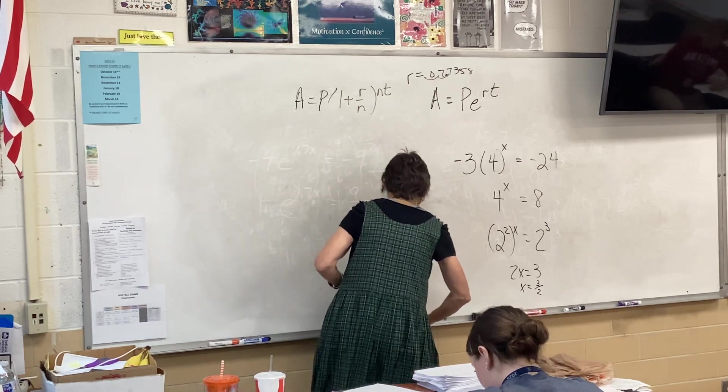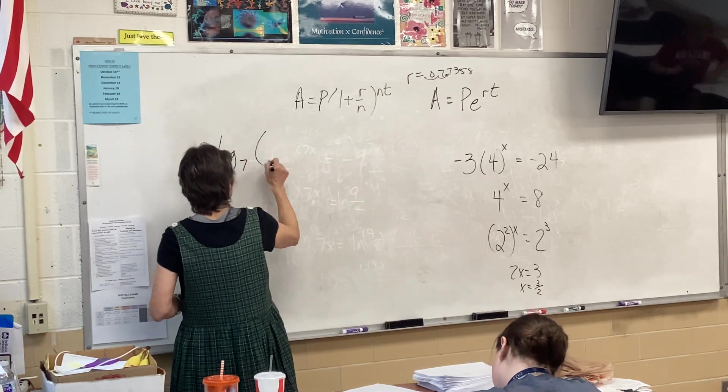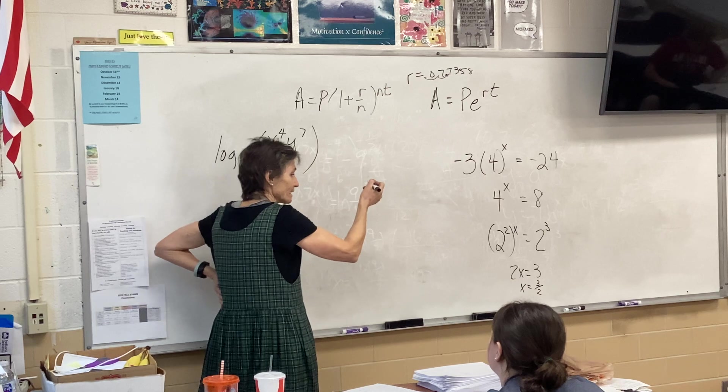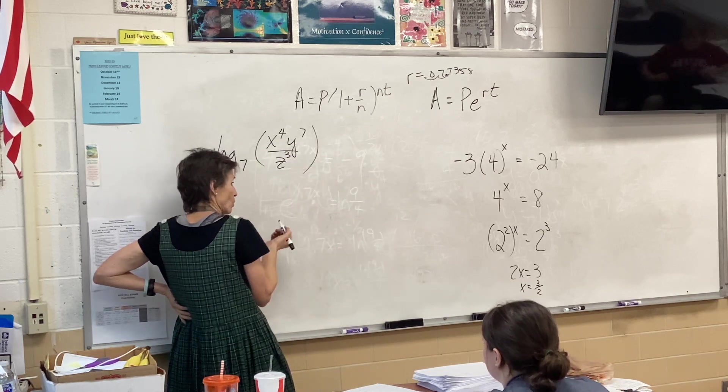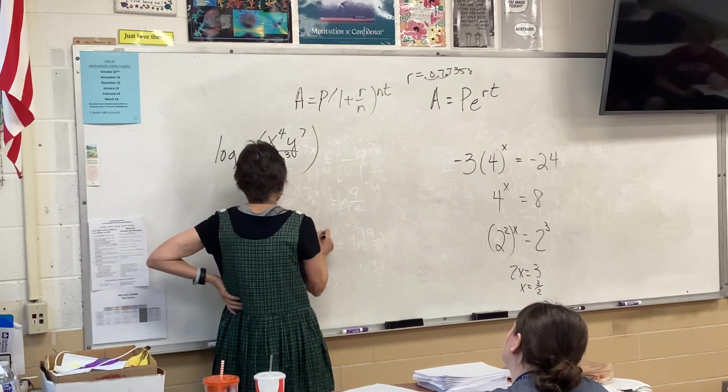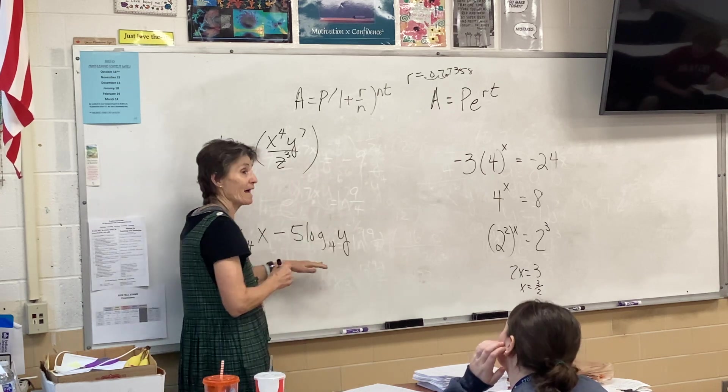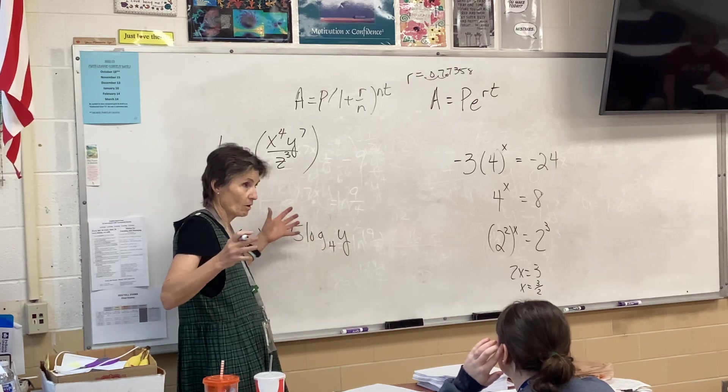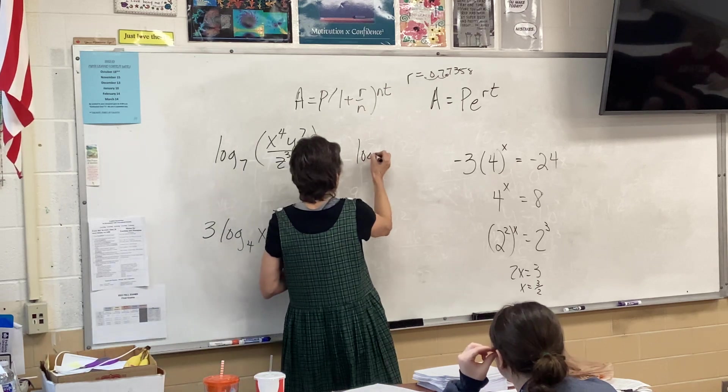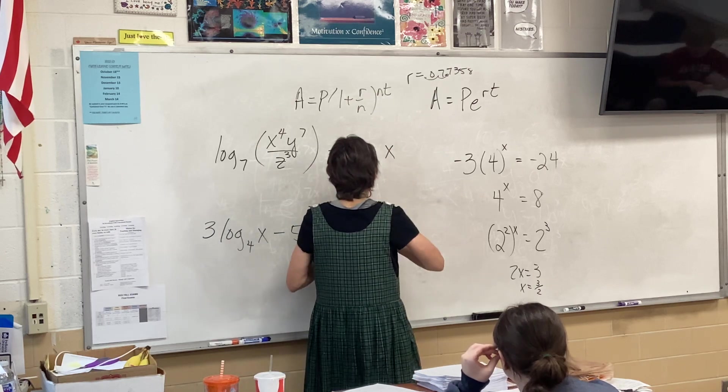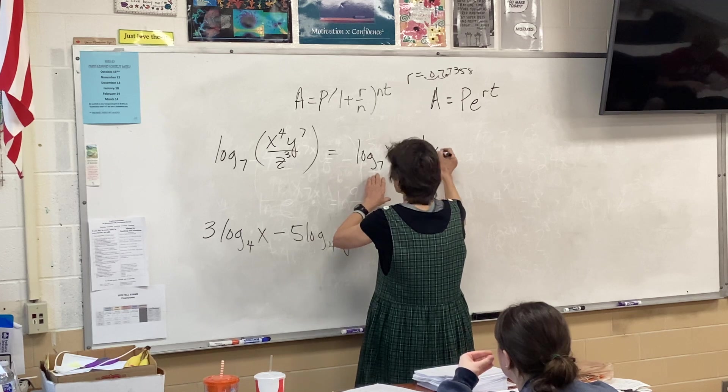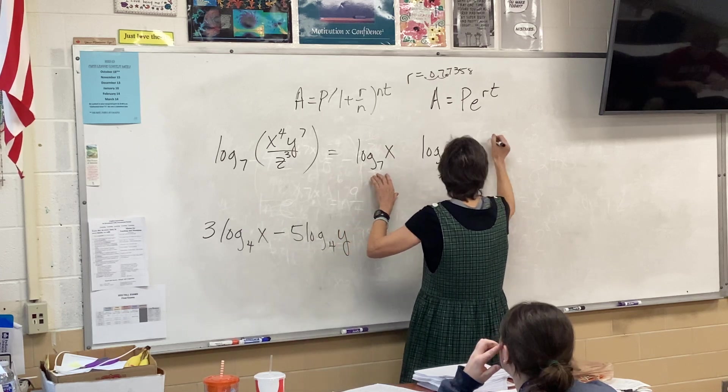So, using our properties of logarithms, we can either take a complicated expression like x to the fourth, y to the seventh, over z cubed, and expand it. Or we can do something that's already expanded, like log base 4 of 3, log base 4 of x, minus 5 log base 4 of y, something like that. We can put that together. So this is called, this one's expanded. All the logs are pulled apart. This one, that's what they want you to do. They want you to pull it all apart. So you're going to have a log of x, a log of y, and a log of z.